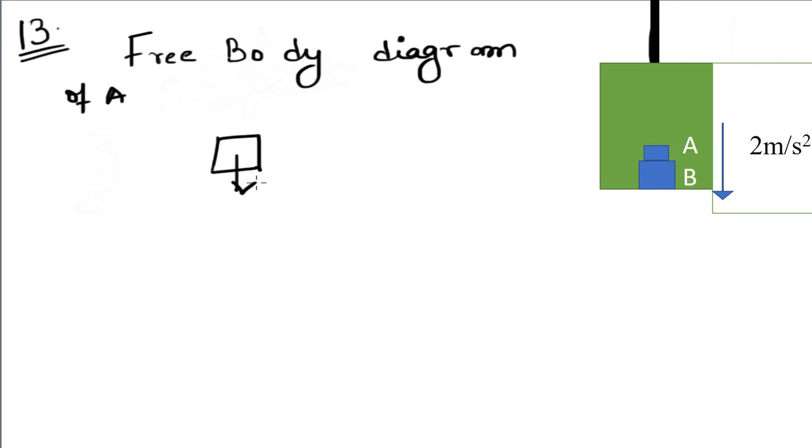The free body diagram of block A looks like this. Downward is mg, its own weight, and upward force is normal reaction. Because of the contact with block B, net force is ma downwards.